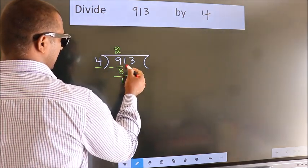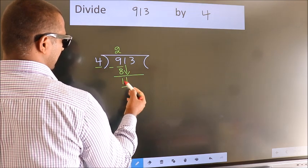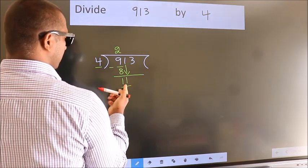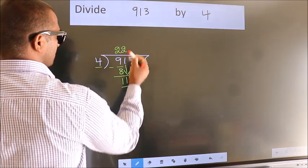After this, bring down the beside number. So 1 down, 11. A number close to 11 in the 4 table is 4 twos, 8.